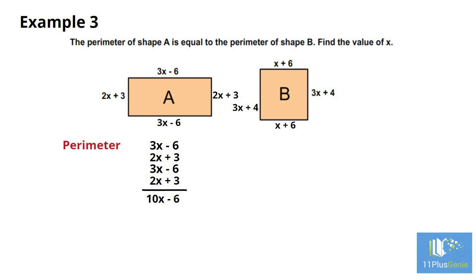For shape B, the perimeter equals x plus 6 plus 3x plus 4 plus x plus 6 plus 3x plus 4. This simplifies to 8x plus 20.